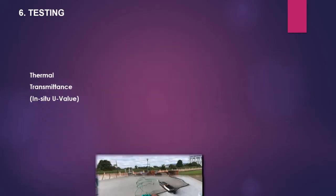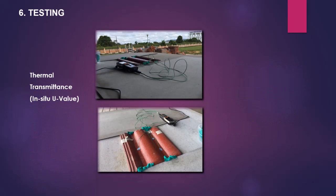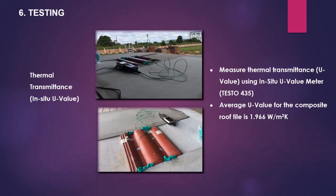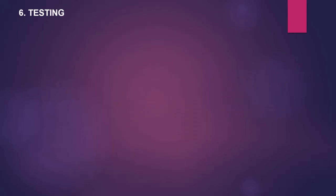The second test is thermal transmittance in-situ U-value measurement, conducted using an in-situ U-value meter, Test TOW 435. The average U-value for the composite roof tile is about 1.966 watts per meter squared kelvin.